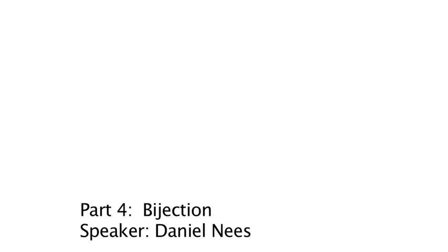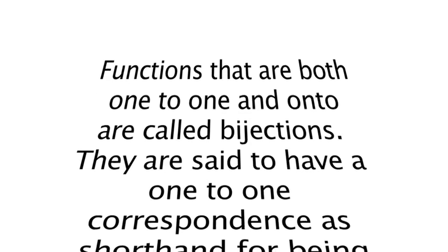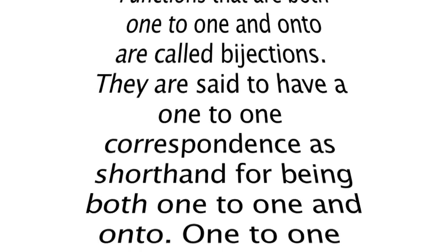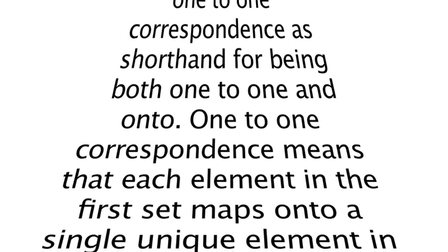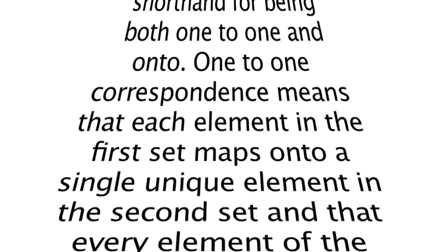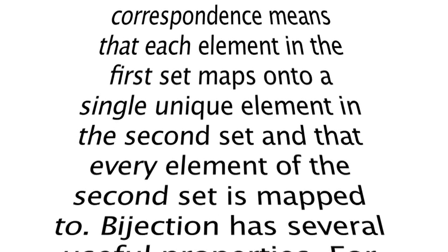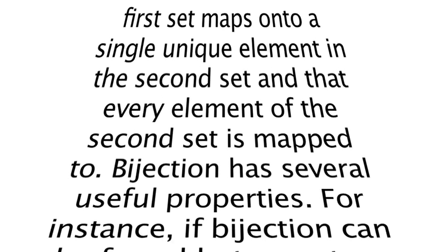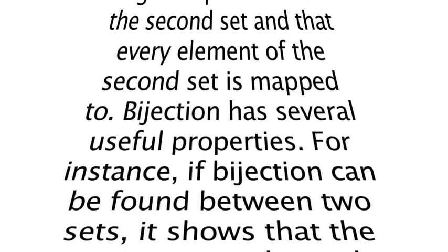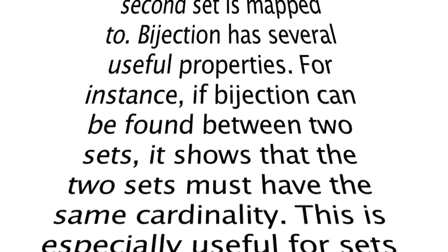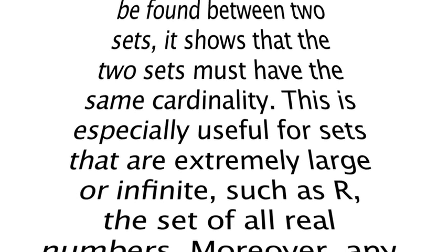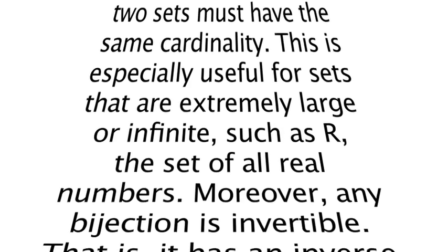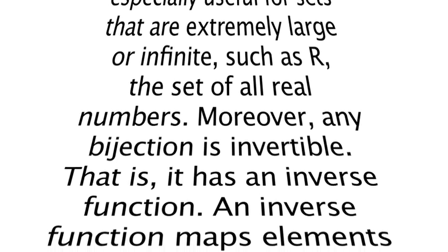Functions that are both one-to-one and onto are called bijections. They are said to have a one-to-one correspondence, as shorthand for being both one-to-one and onto. One-to-one correspondence means that each element in the first set maps onto a single, unique element in the second set, and that every element of the second set is mapped to. A bijection has several useful properties — for instance, if a bijection can be found between two sets, it shows that the two sets must have the same cardinality. This is especially useful for sets that are extremely large or infinite, such as the set of all real numbers.